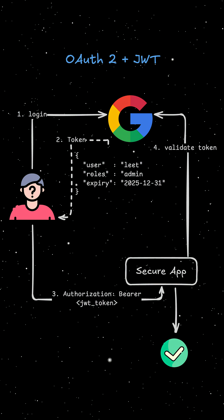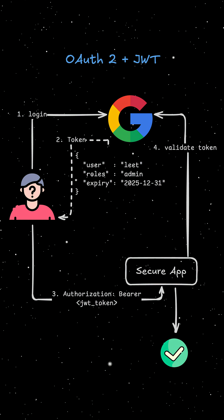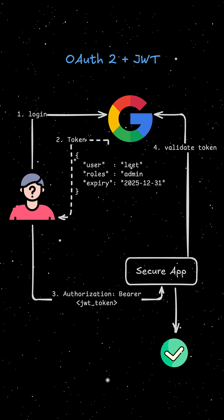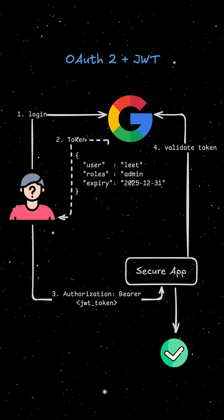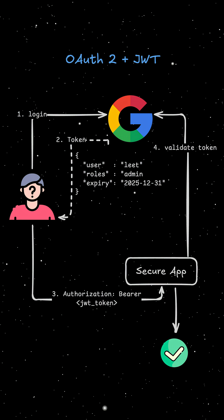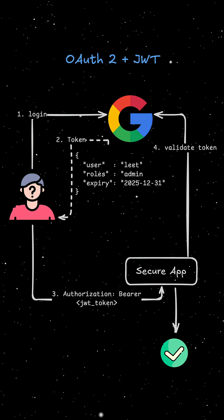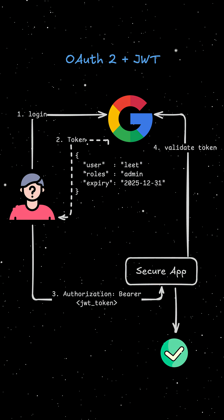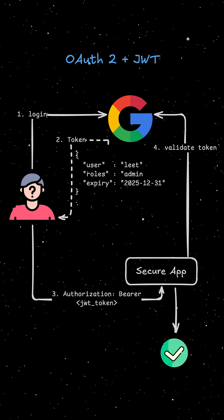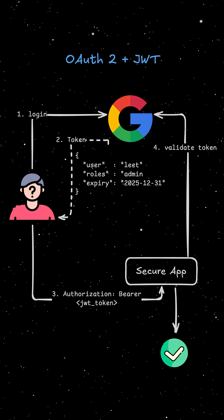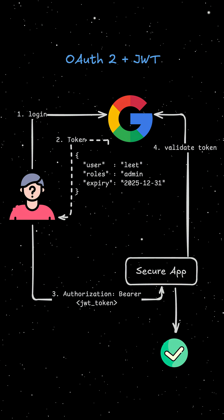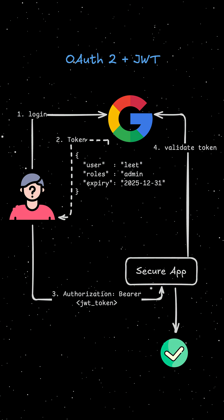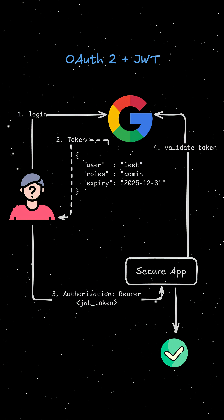Another powerful authentication method is OAuth2 plus JWT tokens. A JWT is a self-contained signed token that contains user information called claims. The server doesn't need to store sessions — the token itself proves the identity. OAuth2 is not just authentication; it's a delegation protocol. It lets one app act on behalf of a user without ever seeing their password.